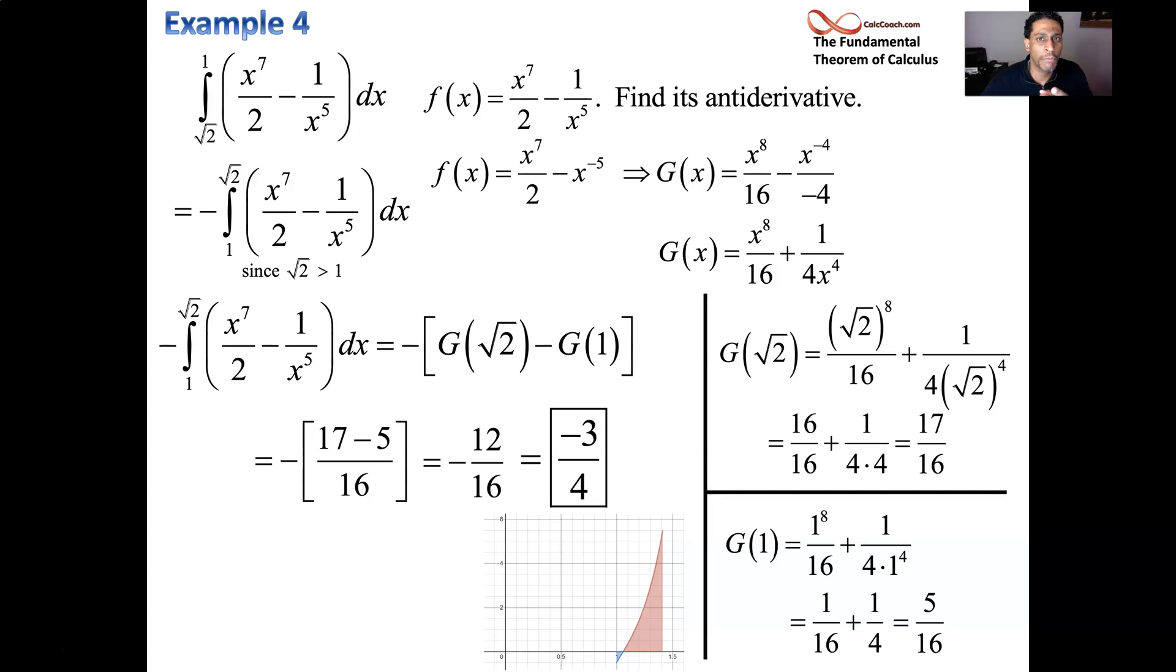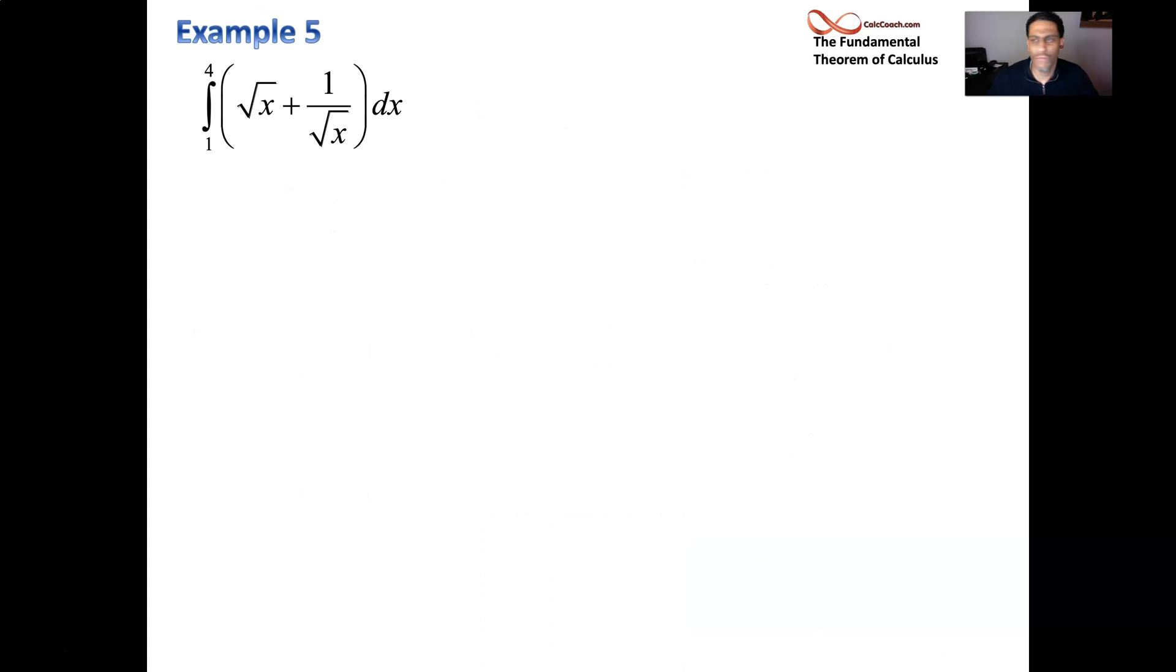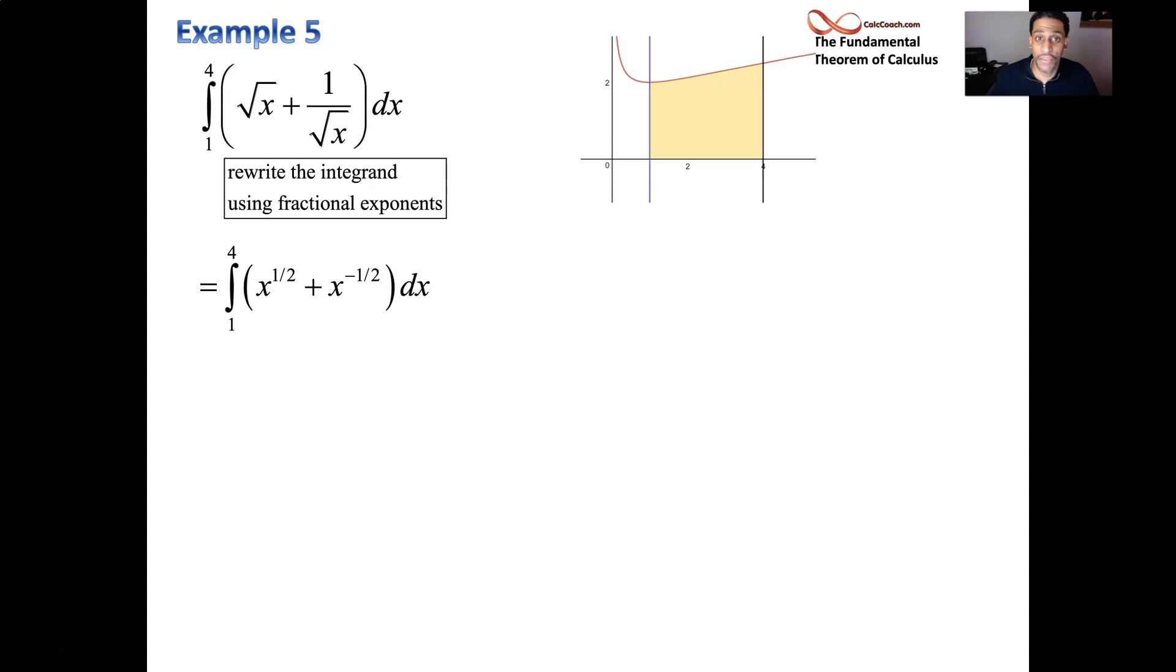I think we have time for one more. Much like the last one, except for instead of a 1 over x to the fifth, we have a 1 over root x. The roots are no good when it's time to find the antiderivative. This is the actual graph there of the function. And we're talking about between 1 and 4. So our job is to rewrite the integrand so it's nice and easy to find the antiderivative. We're going to use fractional exponents. The first one is x to the half, while the second one is x to the negative 1 half.